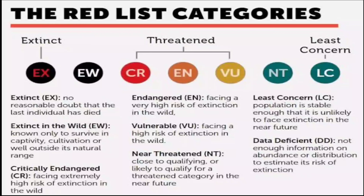Least Concern is divided into two subcategories: Near Threatened and Least Concern. Another subcategory is Data Deficient, which contains names of those species where enough information on their abundance or distribution to estimate the risk of extinction is not available.